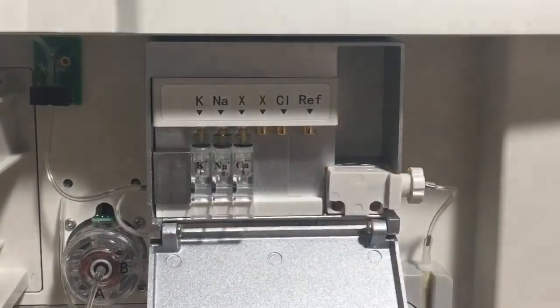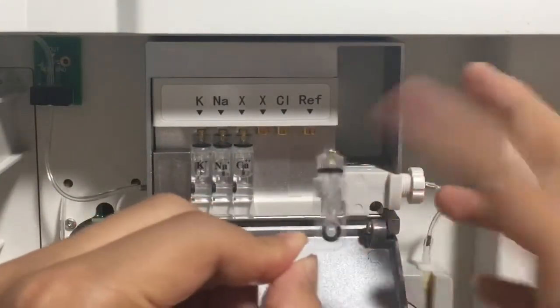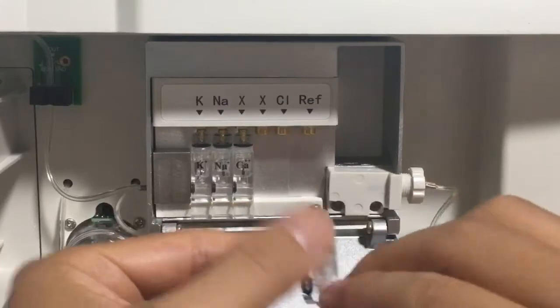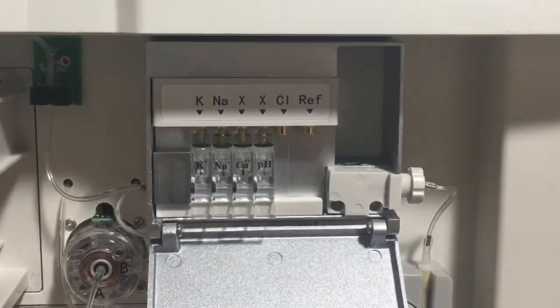When the electrode shows instability, it means there are some bubbles near the membrane.